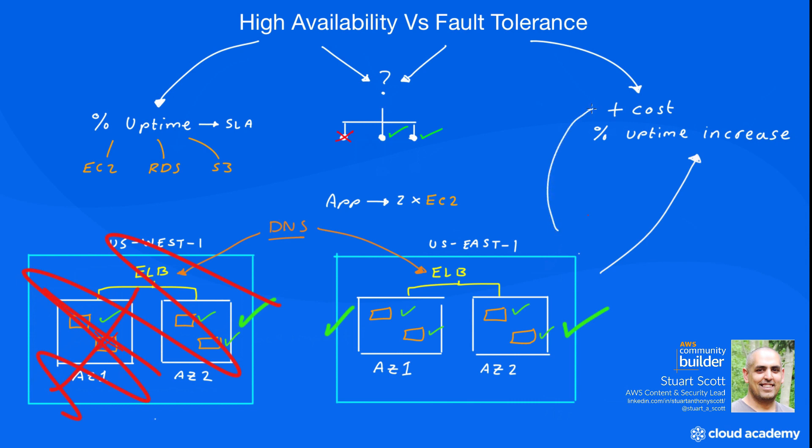But it comes at an increased cost of running two active environments which can tolerate any component failing. Remember, we'll need to have this secondary region running to take advantage of avoiding any downtime should the primary region fail. From this we can surmise that fault tolerant systems are intrinsically highly available, but a highly available solution is not necessarily completely fault tolerant.